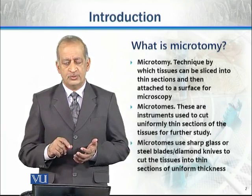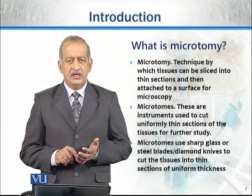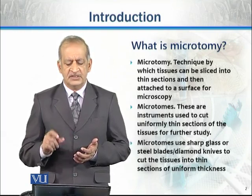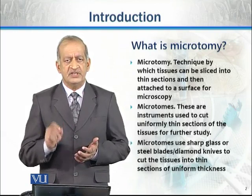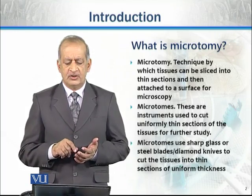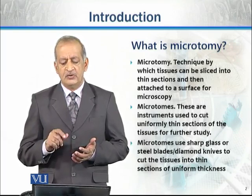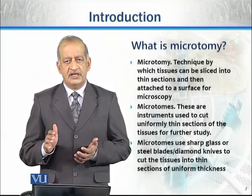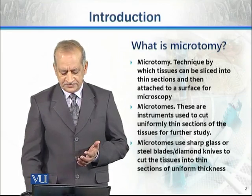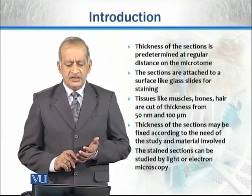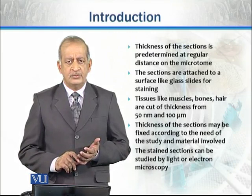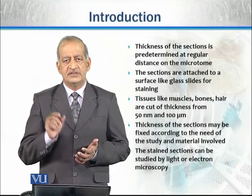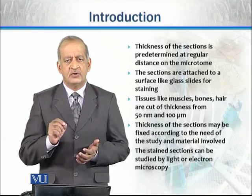These thin sections of animal and plant tissues are cut using very sharp blades — glass blades, steel blades, or diamond knives. With the help of these blades, the tissue is cut into very thin sections. The thickness of the sections is predetermined; for example, we may set 10 micrometers or 5 micrometers.